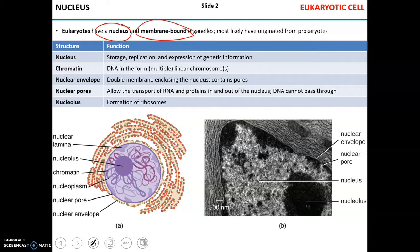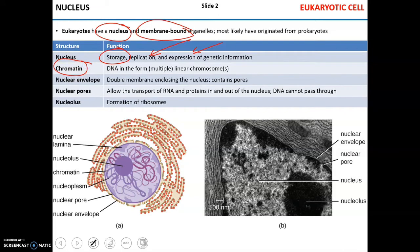The general function of the nucleus is to store genetic information, copy it, replicate it before cell division, and to express it for the purpose of protein synthesis. The genetic information is stored in DNA, and DNA in the nucleus exists in the form of chromatin. Chromatin consists of multiple linear chromosomes, as shown in the schematic depiction here.